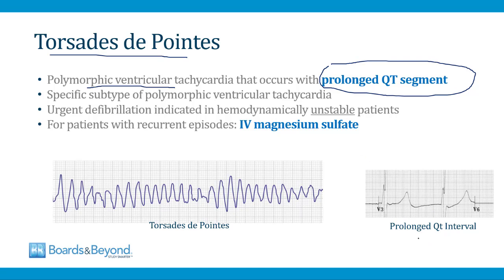The QT interval begins at the onset of the QRS complex and ends at the end of the T wave. A normal QT interval is about 400 to 500 milliseconds. A severely prolonged QT interval — over 600 milliseconds or more than three big boxes wide — can be seen in patients with abnormalities of potassium or calcium, or in those taking certain drugs, especially certain antiarrhythmic drugs. When the QT interval becomes prolonged, patients are at risk for developing Torsade de Pointes, a subtype of polymorphic VT.